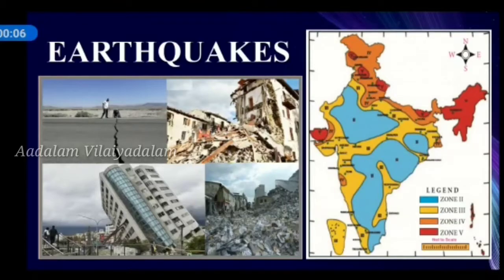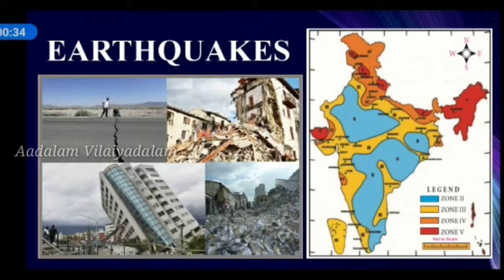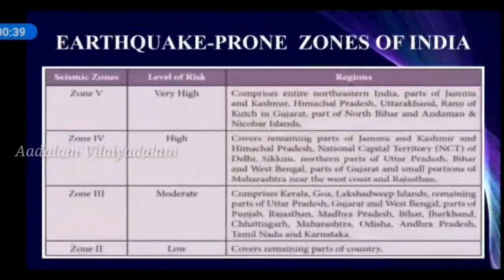Major hazards in India. Earthquake: an earthquake is a violent tremor in the earth's crust sending out a series of shock waves in all directions from its place of origin. Children, see the map and observe the seismic zones of India. Earthquake prone regions have been identified on the basis of scientific inputs relating to seismicity, past earthquakes and the tectonic setup of the region. Based on these inputs, the Bureau of Indian Standards has grouped the country into 4 seismic zones.